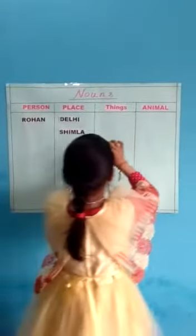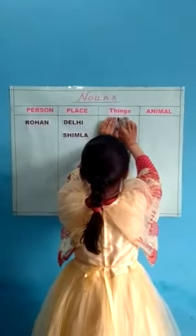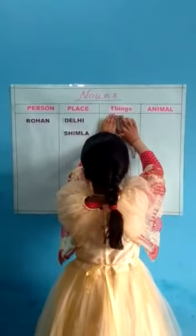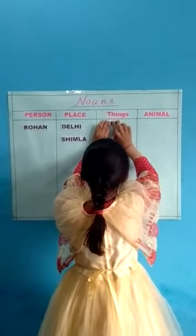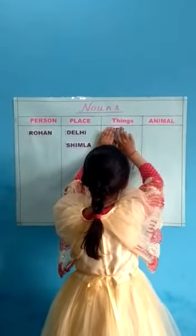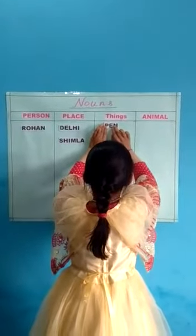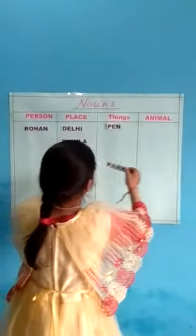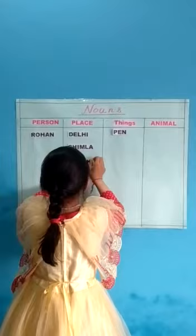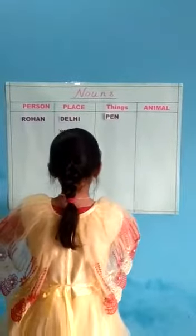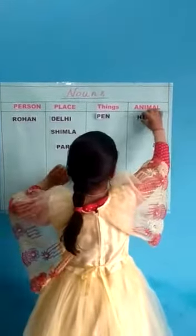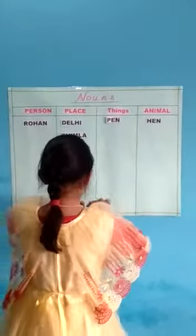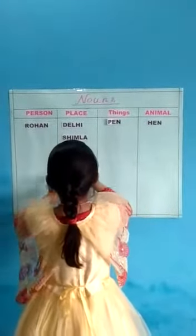Dang. Dang is the name of a thing. Park. Park is the name of a place. Hen. Hen is the name of an animal. Temple. Temple is the name of a place.